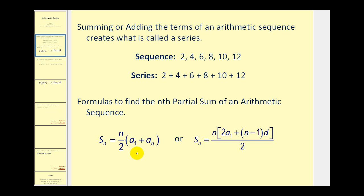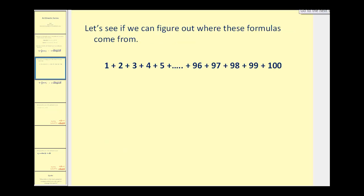Let's figure out where these formulas are coming from by considering this problem. Let's say we want to find this sum but we want to find an easier way to do it than just adding all of these numbers. The first thing you might notice is that the series is an arithmetic series because each term increases by one, so our common difference is positive one.